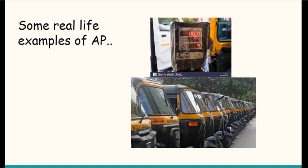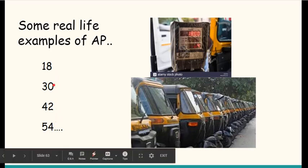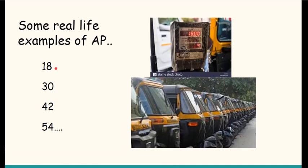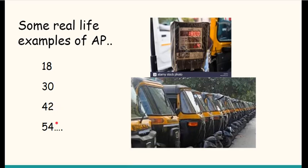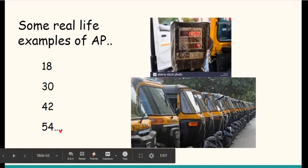The meter always starts at 18 rupees. But then as you keep moving every kilometer, the amount increases. For the first kilometer you pay 18 rupees fixed charge. After that, for every kilometer, it keeps on adding 12 rupees extra. So first kilometer is 18, then you add 12 rupees, then another 12 rupees, and so on. This is an AP with first term 18 and common difference 12.